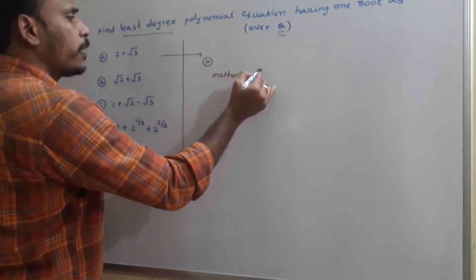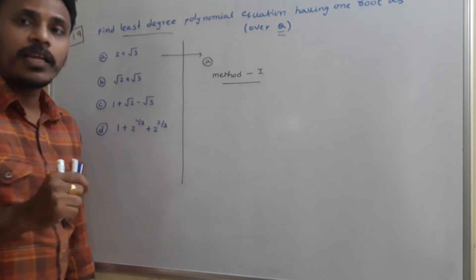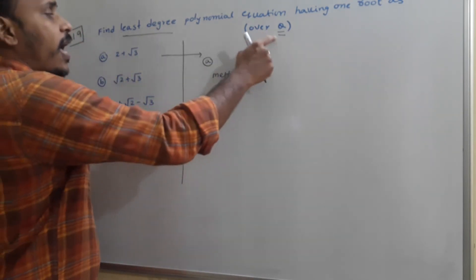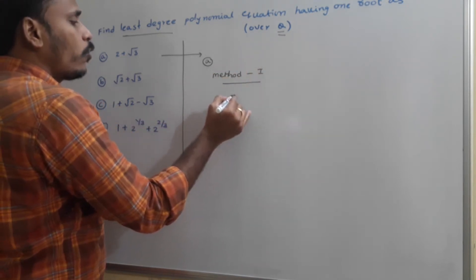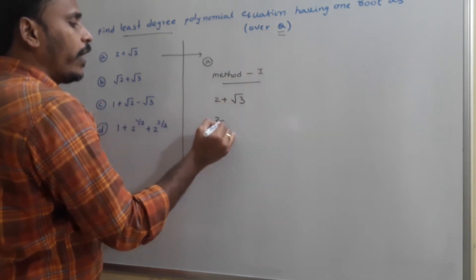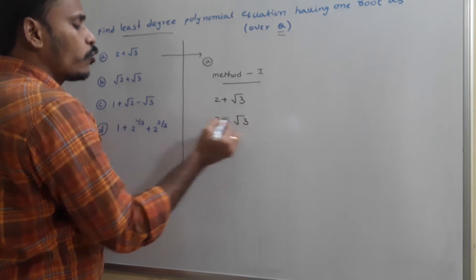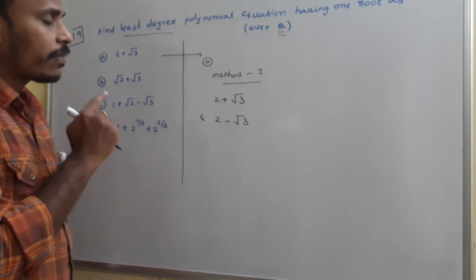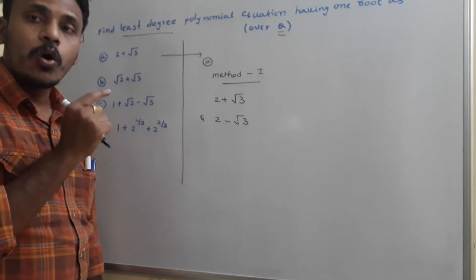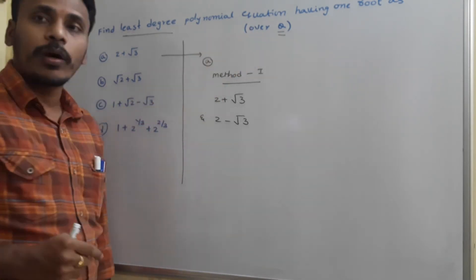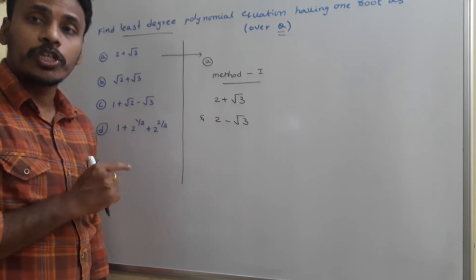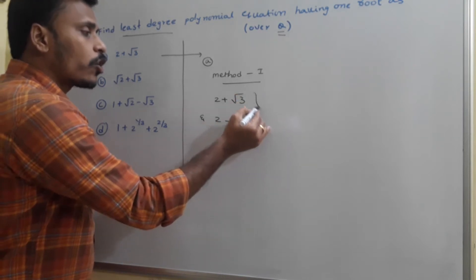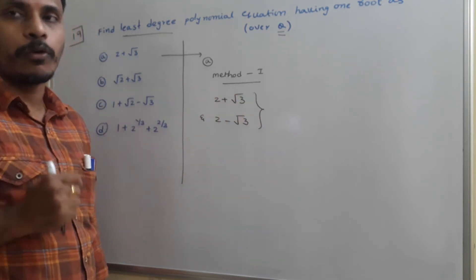Method 1 is a bit simple. Since we are finding a least degree polynomial equation over rational numbers, and one root is 2 plus root 3, then the other root is 2 minus root 3, as we discussed in the previous class. This is only because the polynomial is over rationals. Since the question is to find the least degree polynomial, we conclude that these two are the only roots.